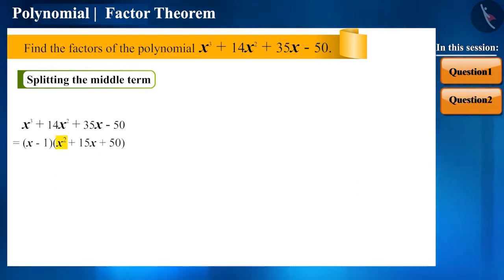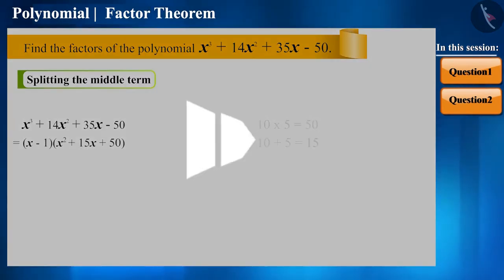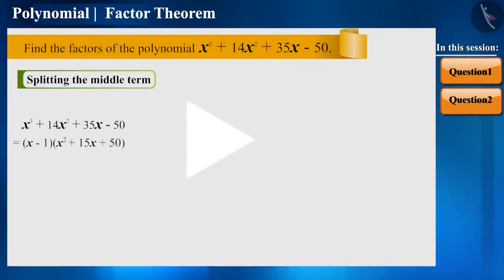Here, the coefficient of x square is 1 and the coefficient of the constant term is 50. And the two terms whose product is 50 and the sum is the coefficient of the middle term, that is 15, are 10 and 5. Pause the video and solve it yourself and see if the other two factors that you are getting are the same or not.